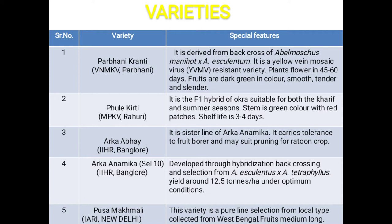Next is Arka Anamika, also called Selection 10, developed by IIHR Bangalore through hybridization, backcrossing and selection from Abelmoschus esculentus into Abelmoschus tetraphyllus. It yields around 12.5 tons per hectare under optimum conditions.